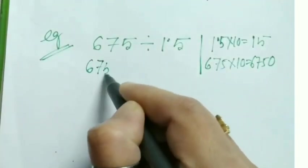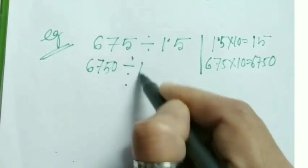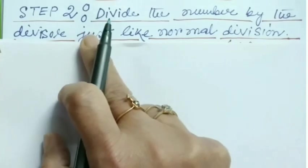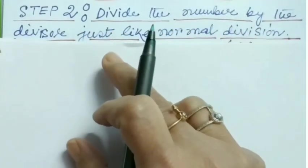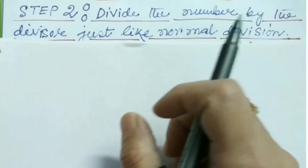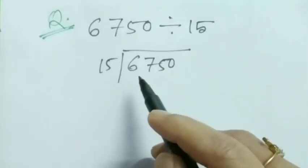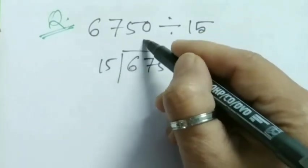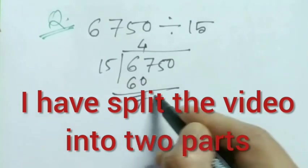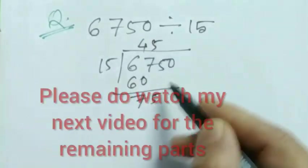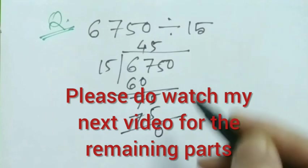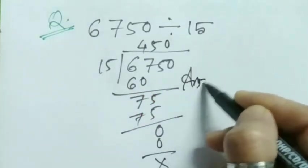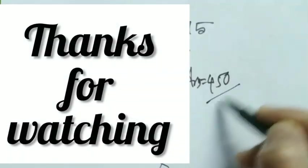Step number two: Divide the number by the divisor just like normal division. Now it becomes pretty easy - just like normal division, I'm dividing. 15 into 67 is 4... So what is the answer? Our answer is equal to 450.